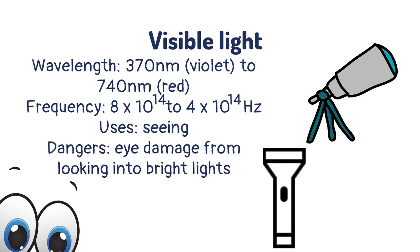Visible light has a wavelength of between 370 nanometers to 740 nanometers and frequencies between 8 x 10¹⁴ and 4 x 10¹⁴. They are used for seeing but can cause eye damage if bright lights are looked at without eye protection.